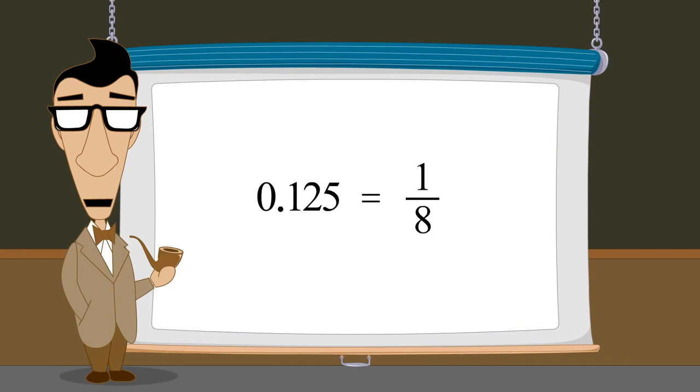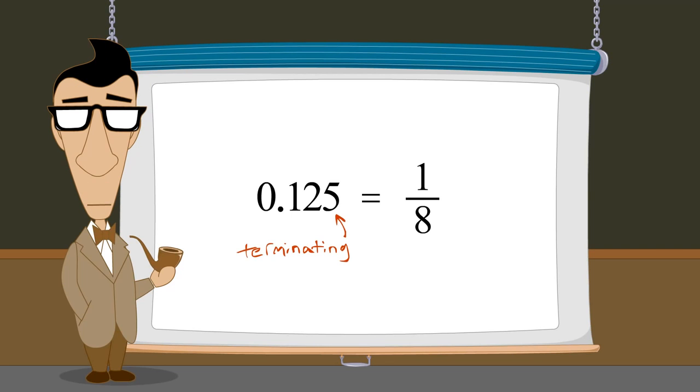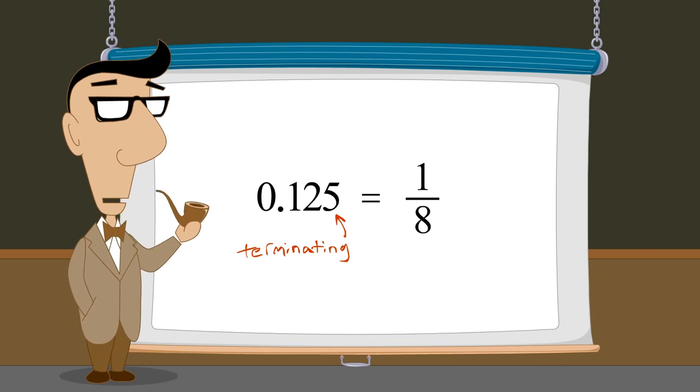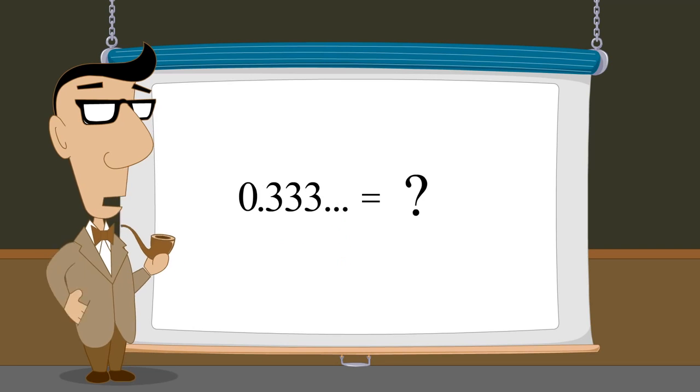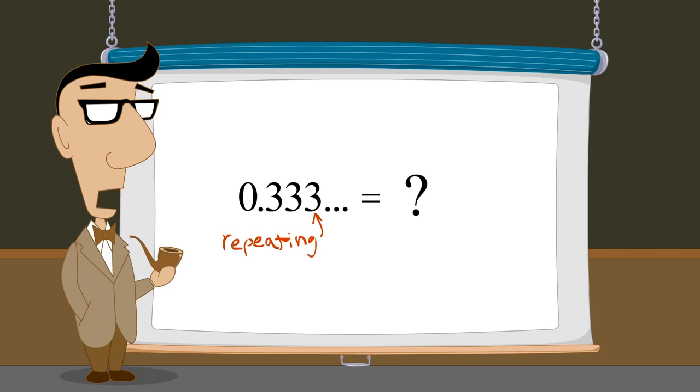So far, we have seen how to convert any decimal number with a finite number of digits to a fraction. In the next lecture, we will see how to convert any decimal number with infinitely repeating digits to a fraction.